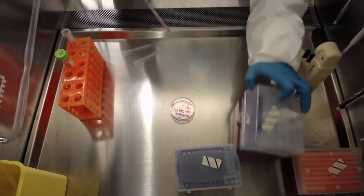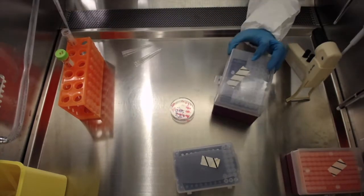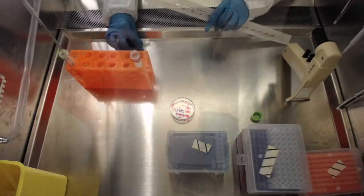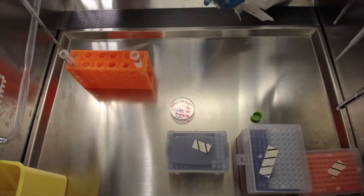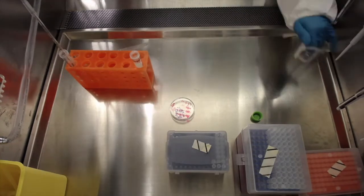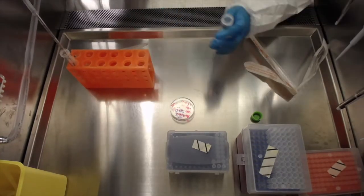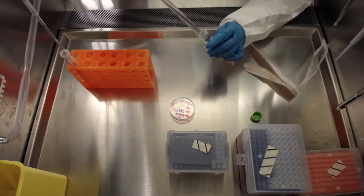In either case, add the appropriate IPSC media to the dish before storing the cells in the cell culture incubator. 3 ml of IPSC media is added per 6 cm dish or 8 ml per 10 cm dish.